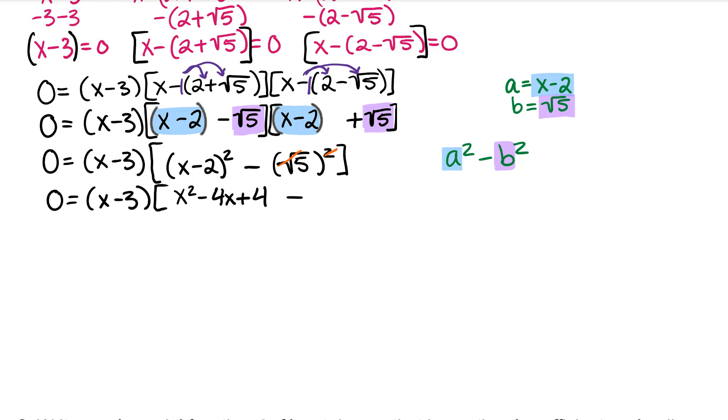Simplify from here. Root 5 squared is just 5, because the square and root are inverse operations.